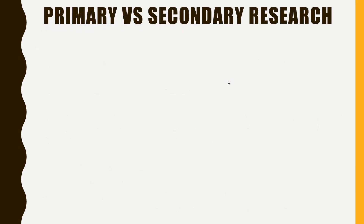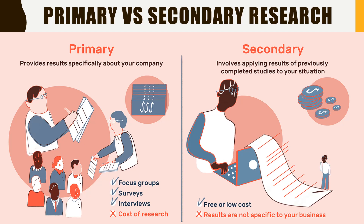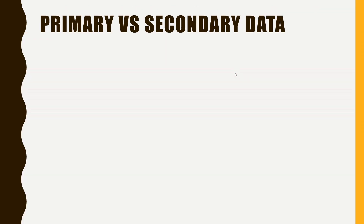For strand two, you're going to look at primary versus secondary research. Primary is where you provide results specifically about your company or the issues — this includes focus groups, surveys, or interviews; for our purposes we'll probably only be able to do surveys. Secondary research involves applying results from previously completed studies to your situation — this is usually online research, books, or someone else's research. Your research question might be something like 'What makes a good cable protector?' and you need to create five of these.